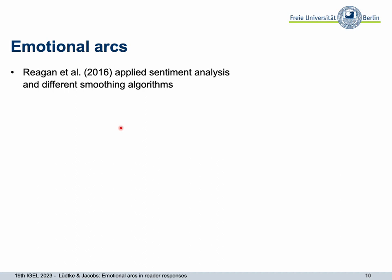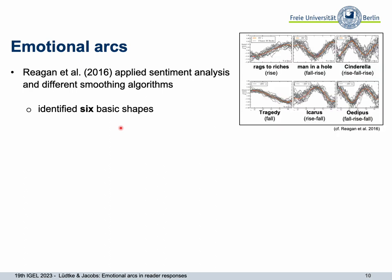In sentiment analysis, authors look into the text and try to identify text passages describing something more positive or more negative. They apply different smoothing algorithms to identify major trends and reduce random variations. Reagan et al., for example, did this for over thousands of books, and identified six basic shapes describing the main emotional changes in the text. These patterns include, for example, a story starting with something negative that gets more positive until the end, or more ups and downs — like a pattern called Cinderella. Reagan et al. interpreted their results as proof of Kurt Vonnegut's thesis that all stories have simple forms. But they also described texts with more complex forms.